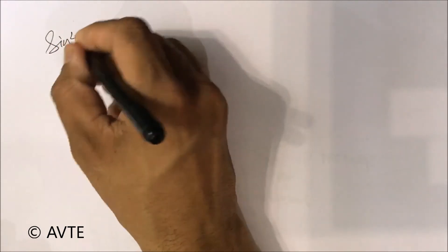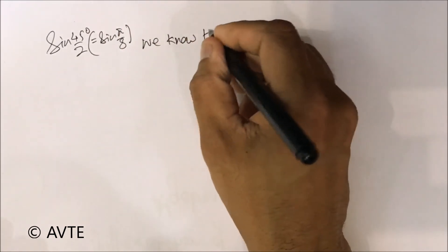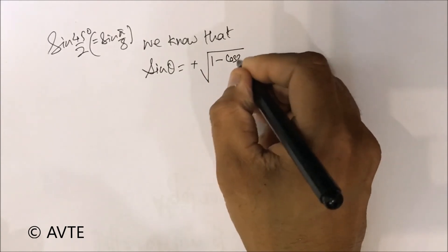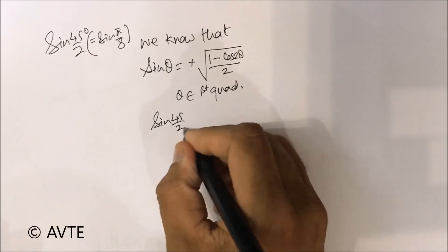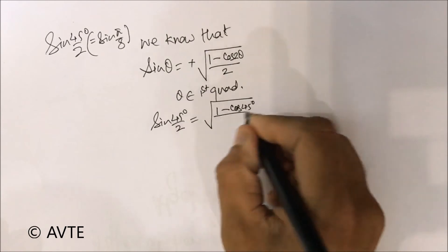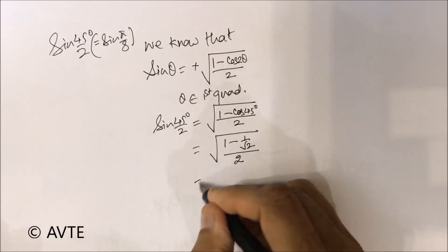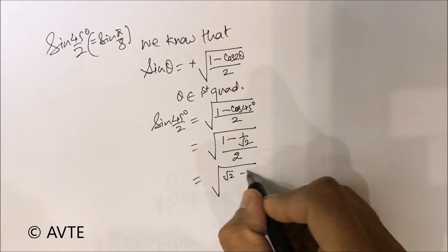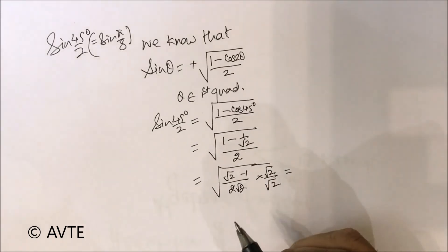Now we need to calculate sin(45/2°), which is also sin(π/8). Using the half-angle formula, sin θ = √((1 − cos 2θ)/2) for θ in the first quadrant, with θ = 45/2°, this equals √((1 − cos 45°)/2). Putting in cos 45° = 1/√2 and rationalizing with √2, we get the simplified value.